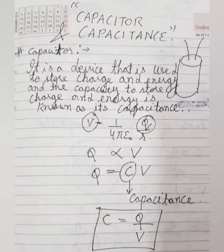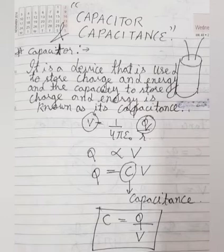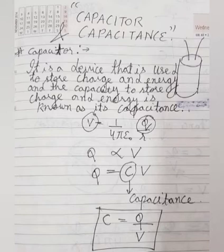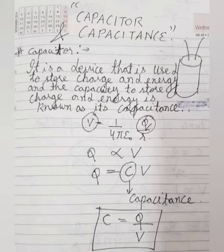Now let us discuss the SI unit of capacitance. The SI unit of capacitance is farad. But 1 farad is a very large unit, so practically we do not use farad. We use microfarad, where 1 microfarad is equal to 10 to the power minus 6 farad. Then nanofarad, where 1 nanofarad is equal to 10 to the power minus 9 farad. And picofarad, where 1 picofarad is equal to 10 to the power minus 12 farad.